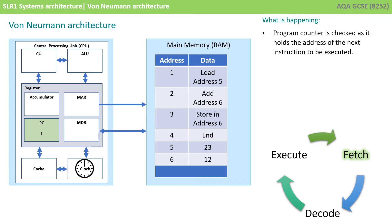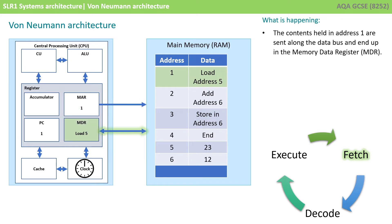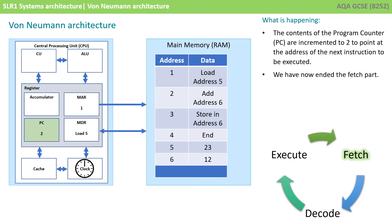We start the fetch-execute cycle: the program counter is checked as it holds the address of the next instruction to be executed. The address is copied into the memory address register, and then goes down the address bus. The contents held in address 1 — that's the instruction 'load address 5' — are sent along the data bus and end up in the memory data register. The contents of the program counter are then incremented to 2 to point at the address of the next instruction, and we've now ended the fetch stage.